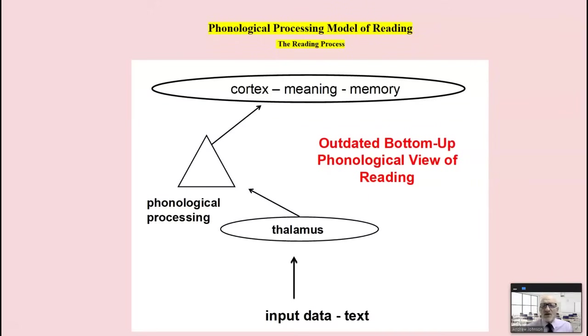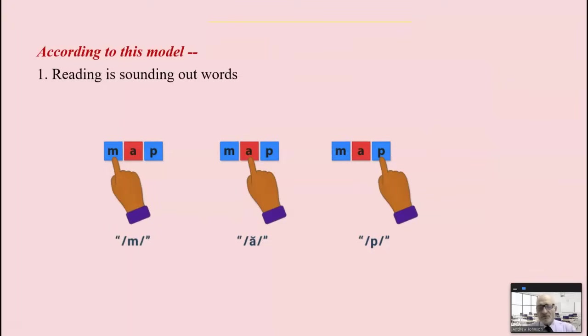So let's start with the phonological processing model. This is an outdated view of reading, but it is too common today. It's a bottom-up view that says that reading is simply a matter of looking at the input, the text data. From there it moves to the thalamus, the relay station in the brain. We process it letter by letter and it goes up to the cortex.